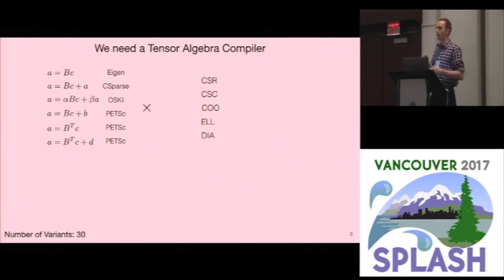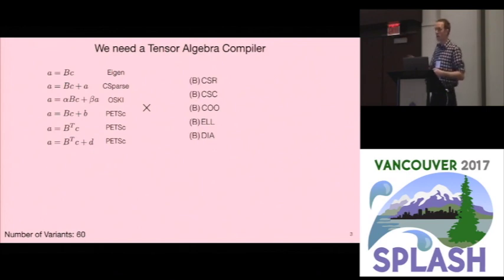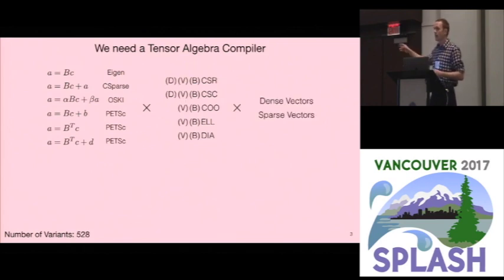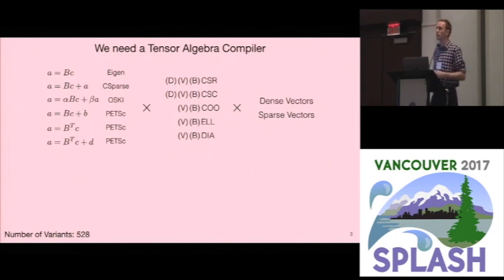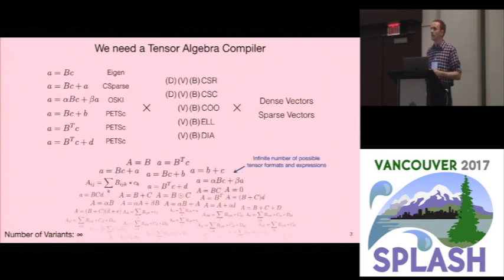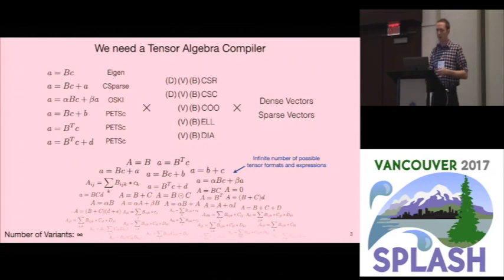Then you have to have different formats for the sparse matrix — these are some of the most common formats. These formats can be blocked, variable-size blocked, or doubly compressed. And then the vector can be dense or sparse as well. So the number of variants you have to write grows a lot, and this is just sparse matrix-vector multiplication. Then we add in the infinitely many other tensor algebra expressions, and now we have to go towards a compiler.